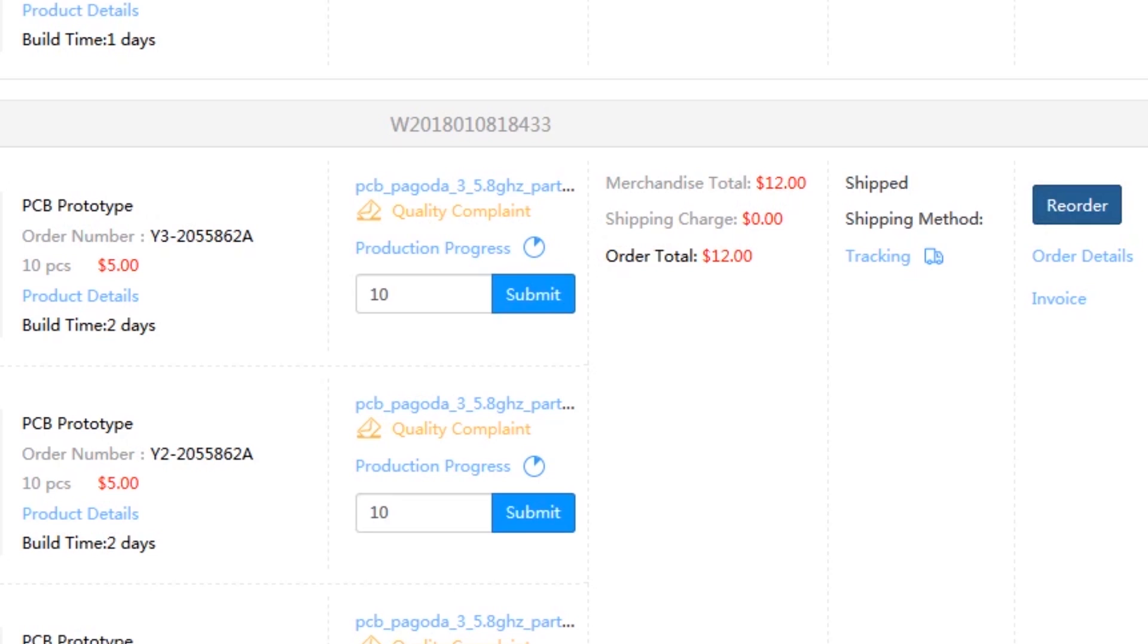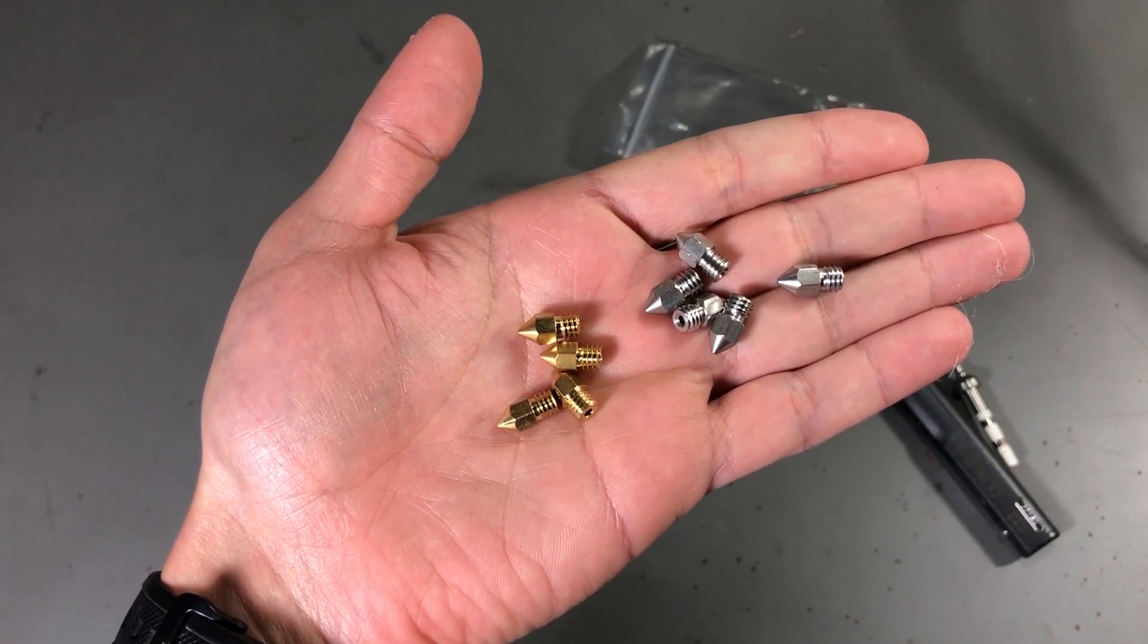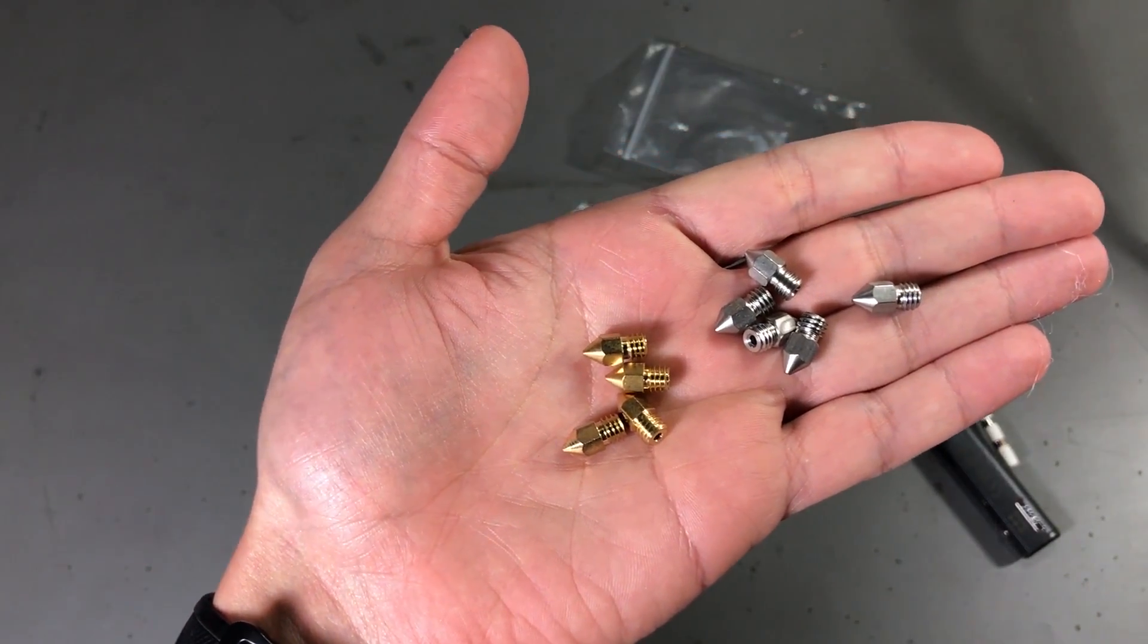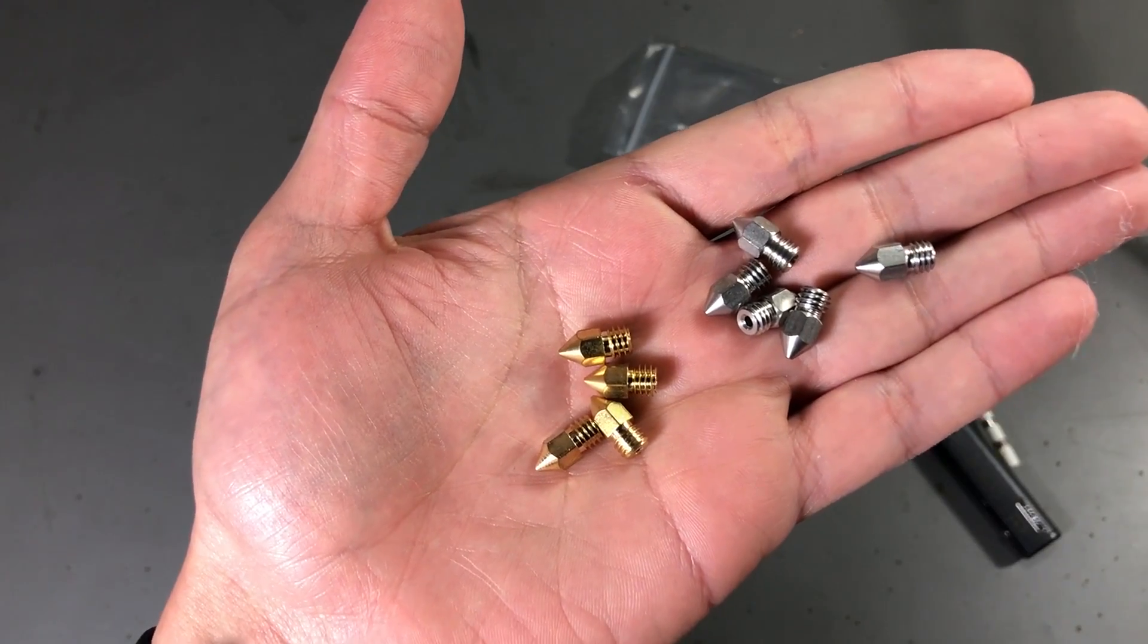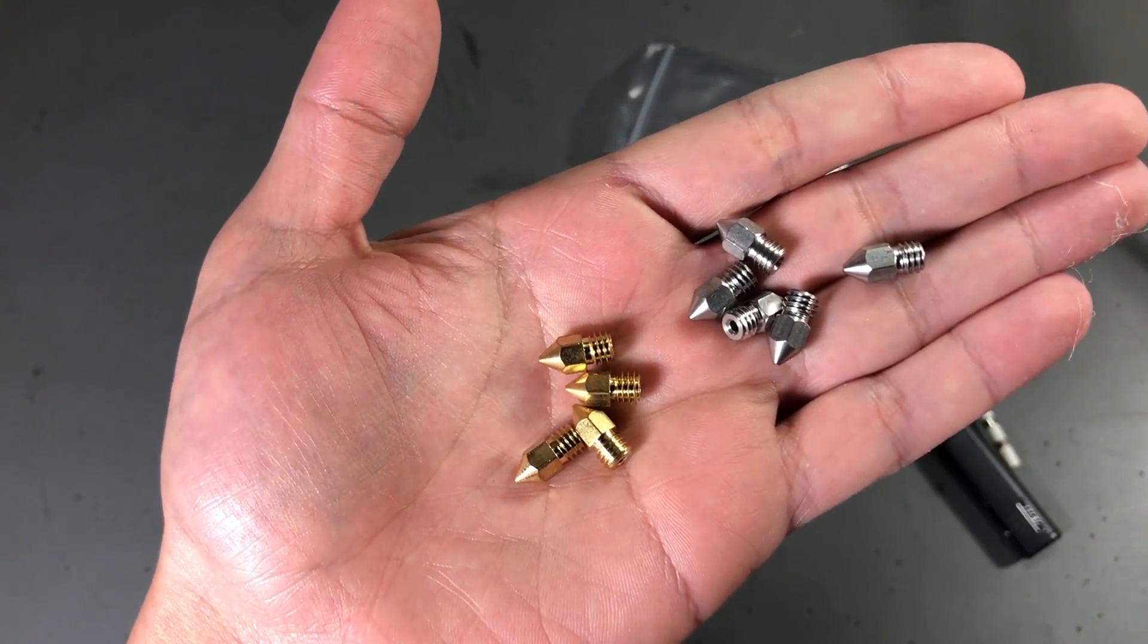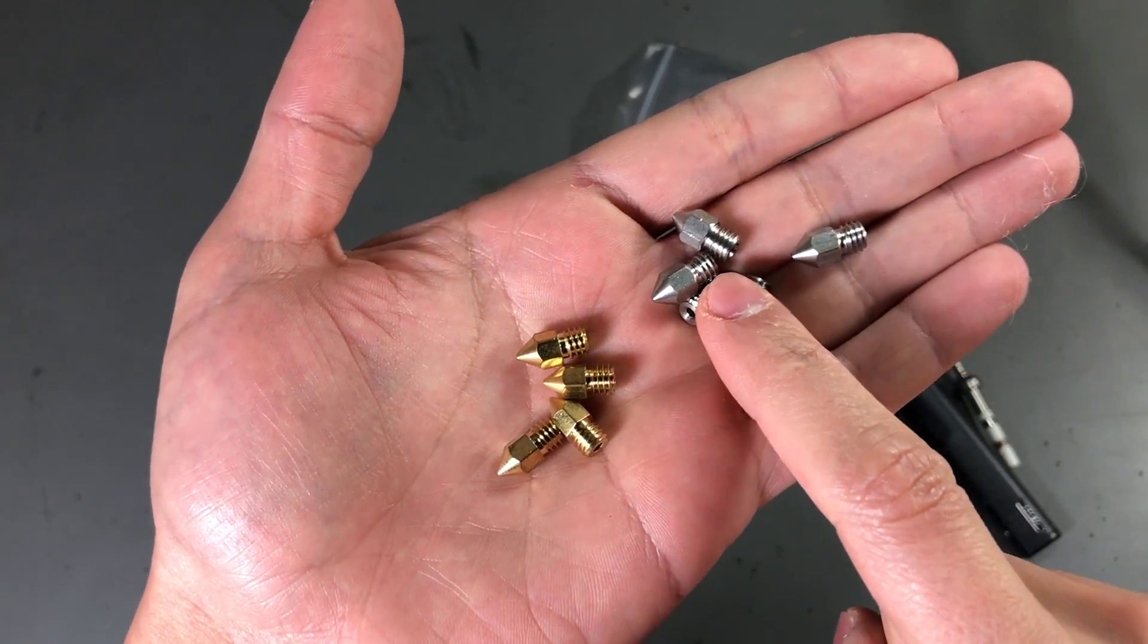Next I have some parts for my 3D printer. These are head nozzles and they have a 0.4mm hole. They work for 1.75mm filament and I've ordered a brass set and a stainless steel set.